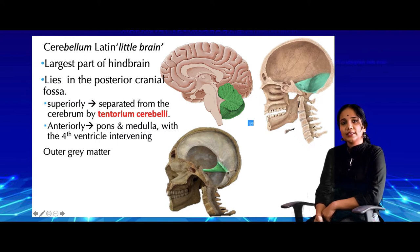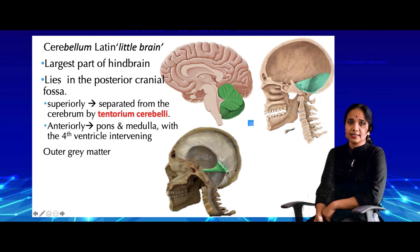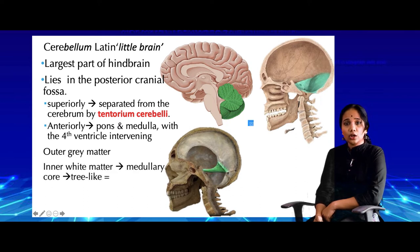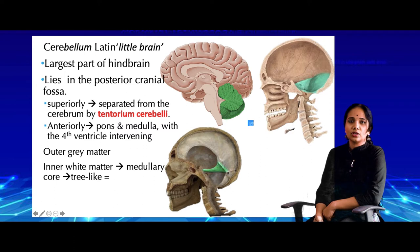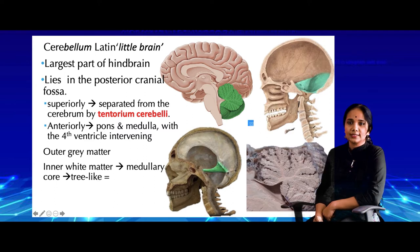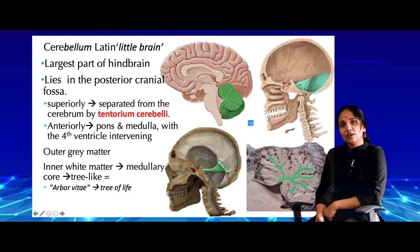Just like the forebrain, it has gray matter on the outside and white matter on the inside. The white matter is also called the medullary core, and it has a special tree-like distribution called the arbor vitae. You can see in this picture the tree-like pattern of the cerebellum.